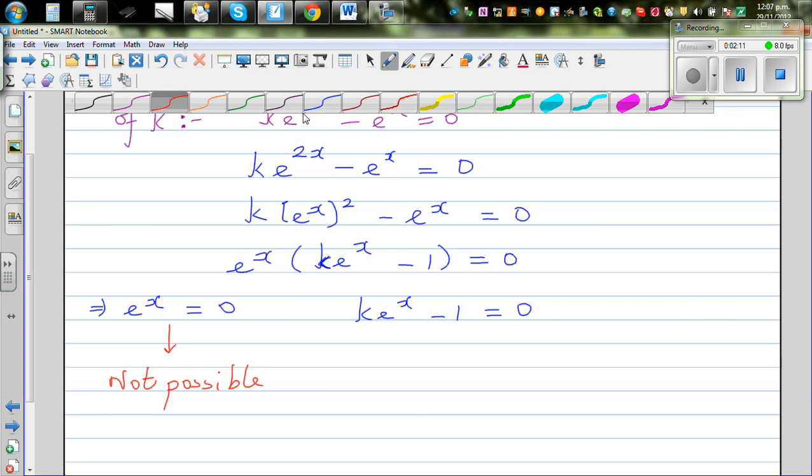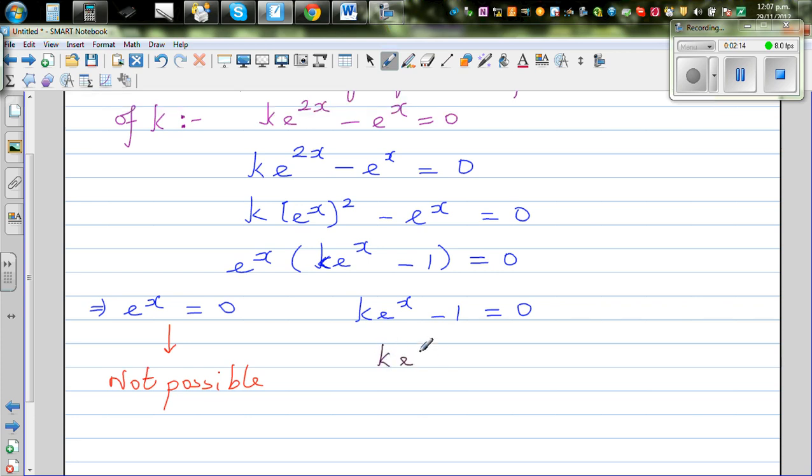Now solving for this, you can say k times e to the power x equals 1. Now dividing both sides by k, e to the power x equals 1 over k.